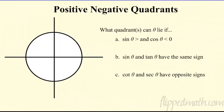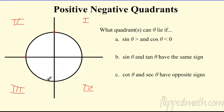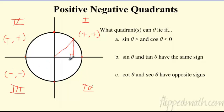Now let's talk about when trig functions are positive and negative across the four quadrants. In quadrant one, both x and y are positive — over and up. In quadrant two, x is negative, y is positive. In quadrant three, both are negative. In quadrant four, x is positive, y is negative. Since x is cosine and y is sine on the unit circle, this tells us where each function is positive.